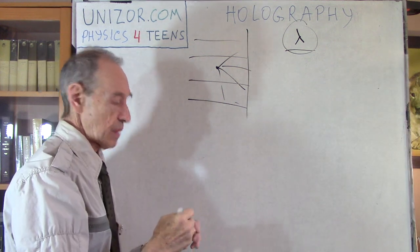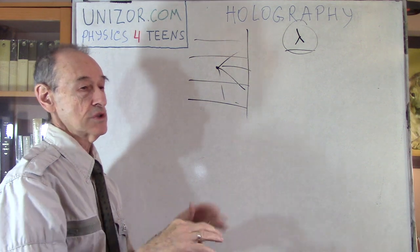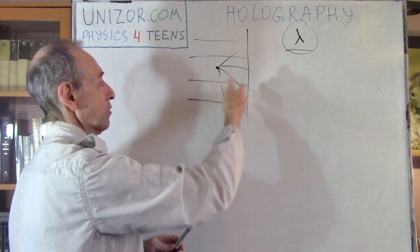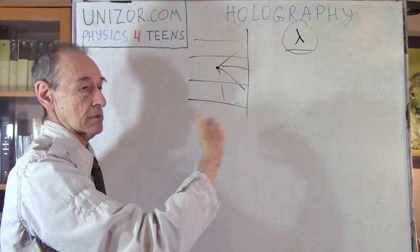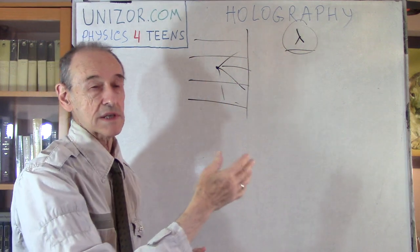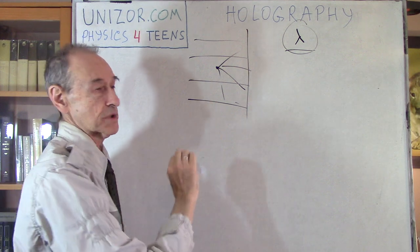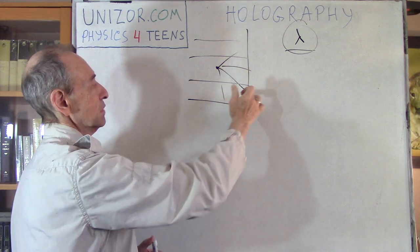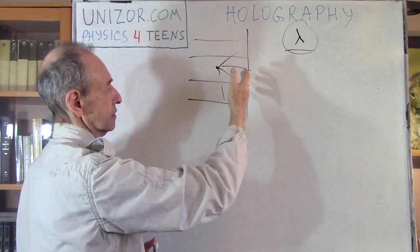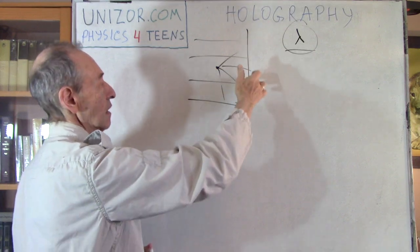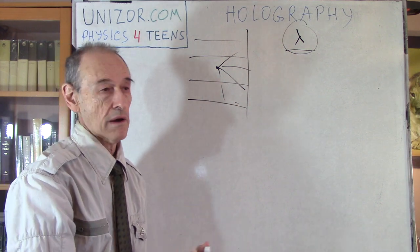This interference picture can be recorded because there are bright and dark spots. Some kind of chemical compound containing silver is used. The bright spots will modify this compound and a silver spot will form there, while dark spots remain dark.